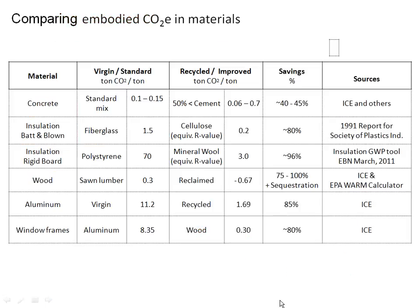This next slide shows each material with its standard or virgin material CO2 output in tons of CO2 per ton of material. If you look at alternates, this gives you an idea of the range of reduction by picking a lower embodied carbon material. For concrete, you can cut it roughly 40-45%. Cellulose versus fiberglass shows significant savings. On the far right are the sources — I can answer questions at the end about where this data comes from.